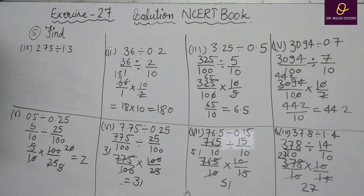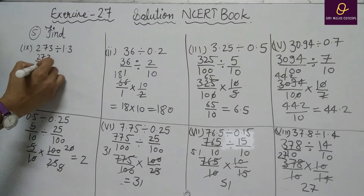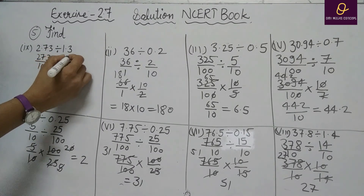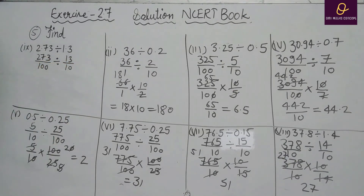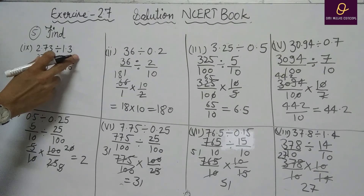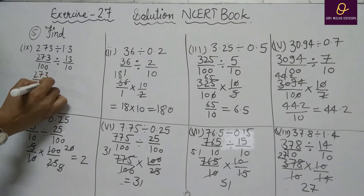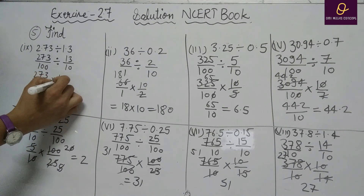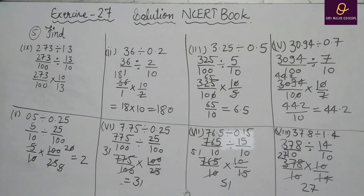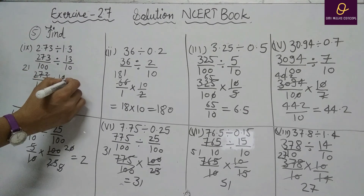Part I: 2.73 divided by 1.3. Remove decimal: 273 divided by 100, and 13 divided by 10. Divide changes to multiply; reciprocal of 13 by 10 is 10 by 13. Cancel 13 with 273 (13×21=273), and 0 with 0. Result: 21 by 10, which equals 2.1.